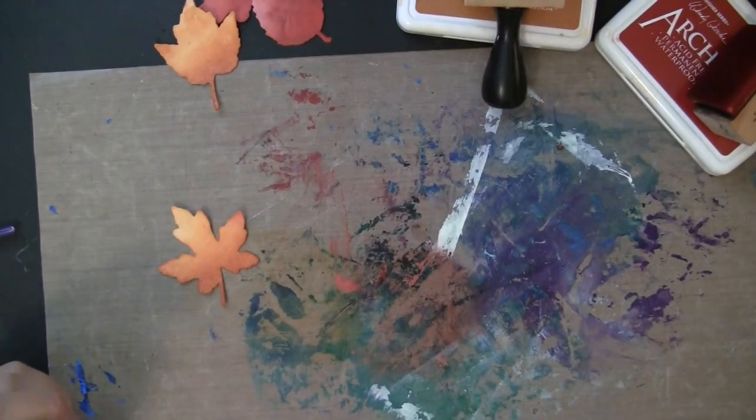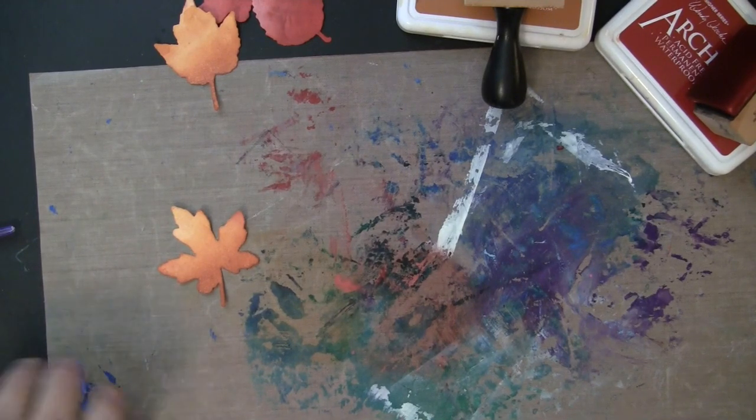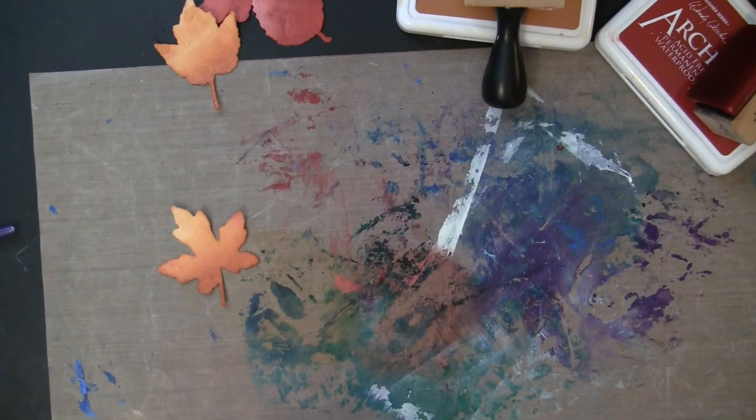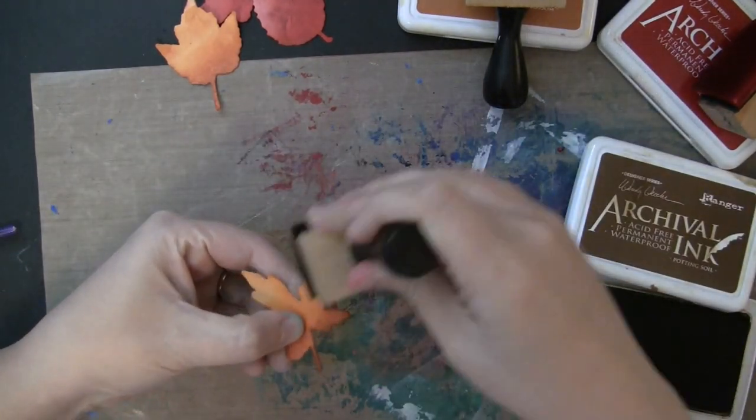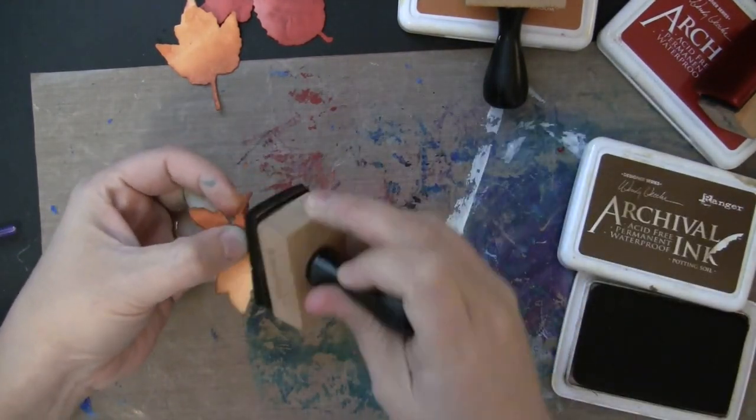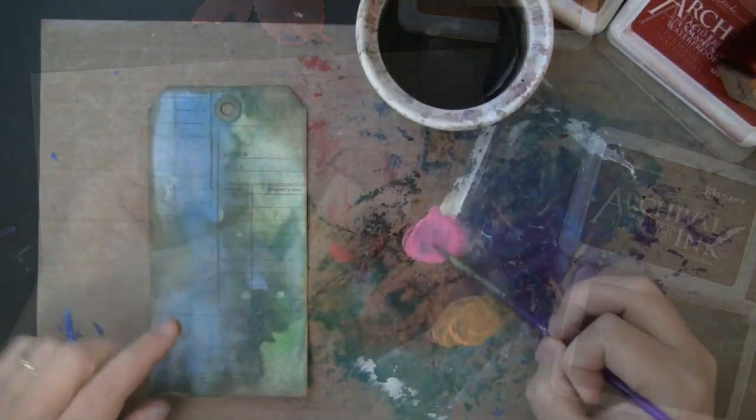And then once I've inked all of those leaves that I'm planning to use, I'm going to take a darker color, Potting Soil, and I'm going to add this around the edge of all the leaves, and I also added a light layer around the edge of the tag.